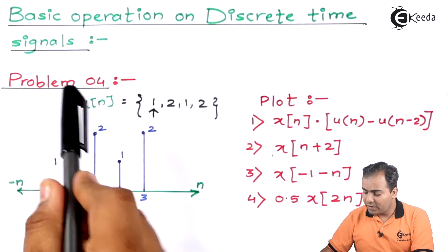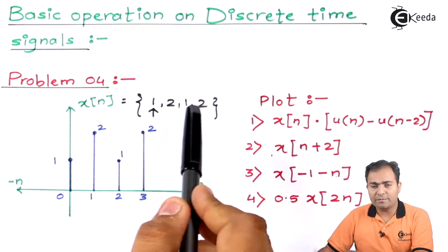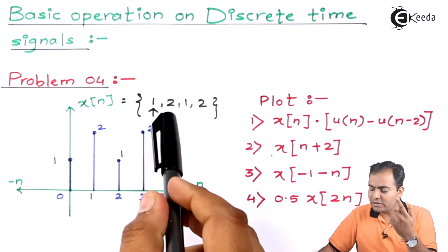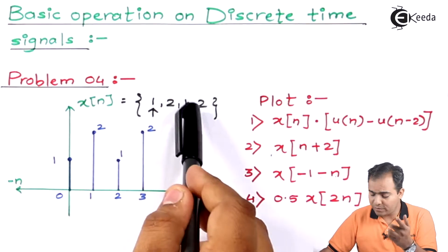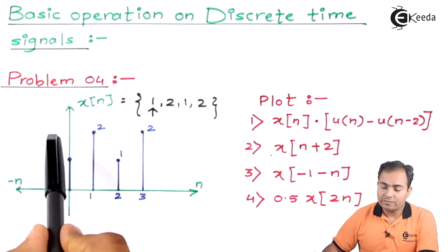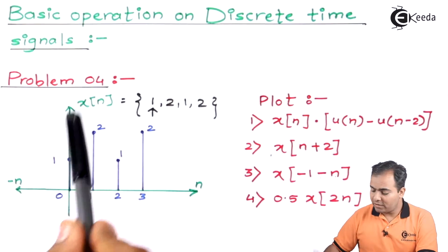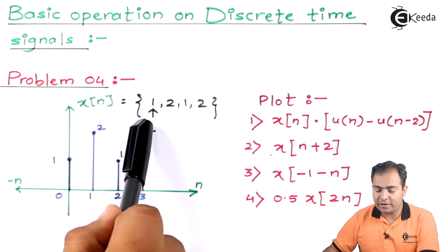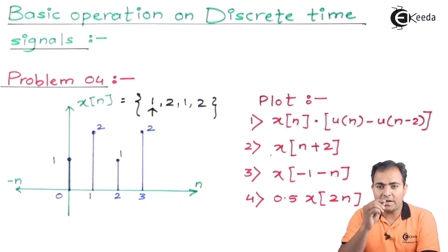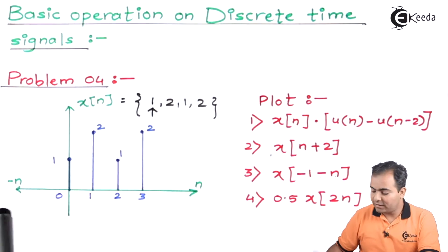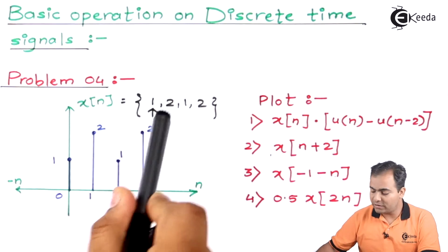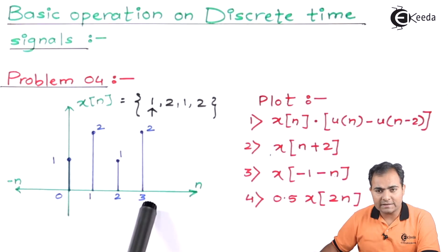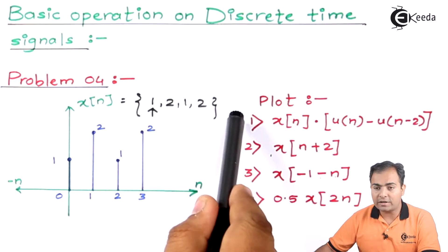In Problem Number 4 I have already plotted the graph as well as its sequence. In your exam they may give you the sequence or the graph. If the graph is given, look at the origin — you have amplitude 1. Mark one arrow below, representing that the sample amplitude is present at origin. The next samples are 2, 1, 2, written in the sequence at their respective instances. We have to find the plot for these four sub-questions.